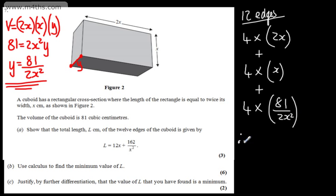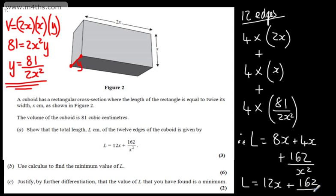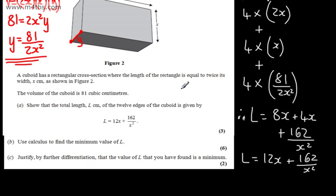Therefore, we can say now that the length is going to be 8x plus 4x. And then if we look at this one here, the 4 and the 2 are going to cancel, plus 162 over x squared. And just tidying that up, L is equal to 12x plus 162 over x squared, as required. So I've just defined this length to be y, to express that in terms of x.